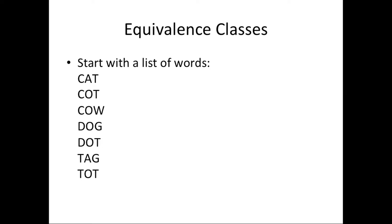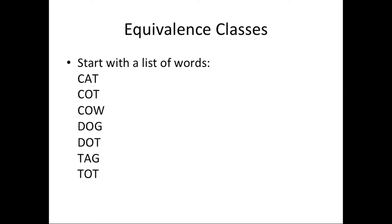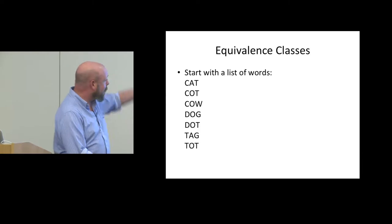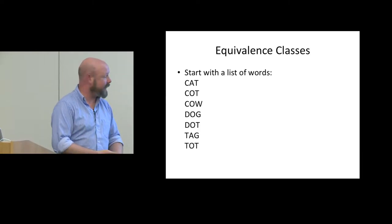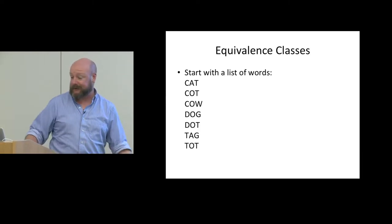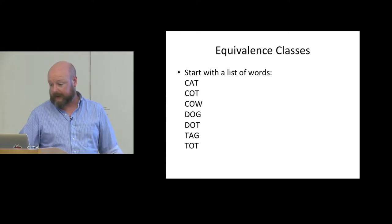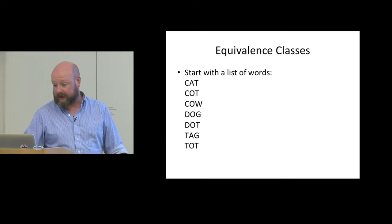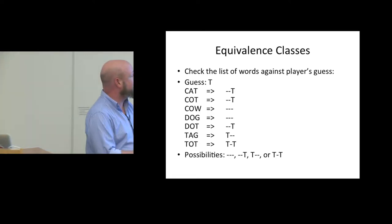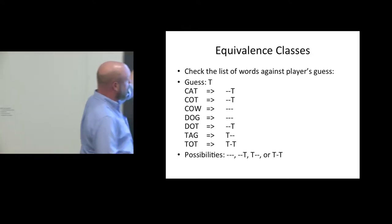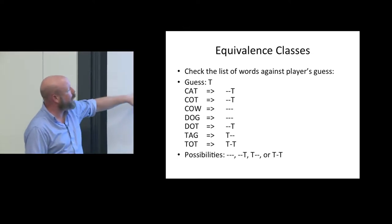Let's say we start with a very short list. We've got these seven items: cat, cot, cow, dog, dot, tag, and tot. We've only got maybe a half dozen letters here to work with. The player is going to come up and guess a letter. Let's say they've guessed the letter T.